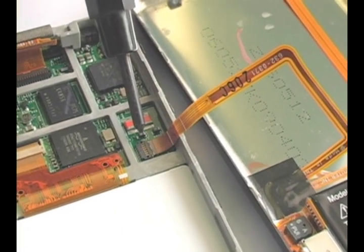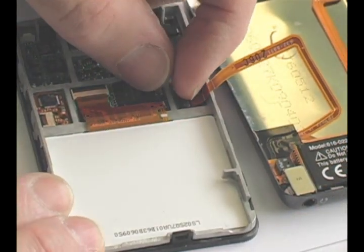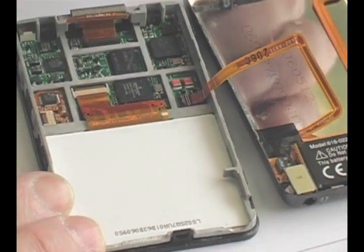Disconnect the headphone jack ribbon by flipping up the black tab across from where the cable is inserted. Then pull the cable from the connector.